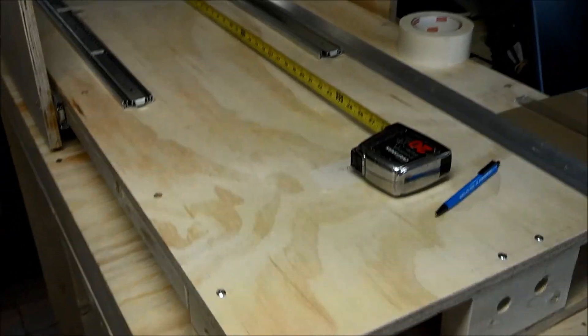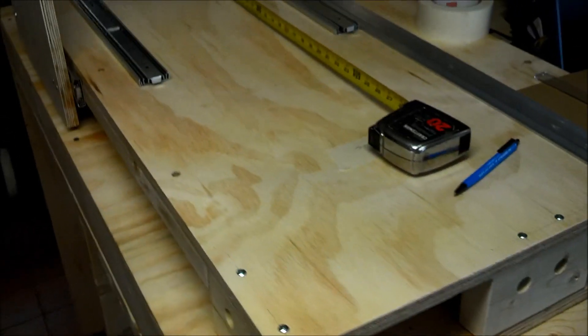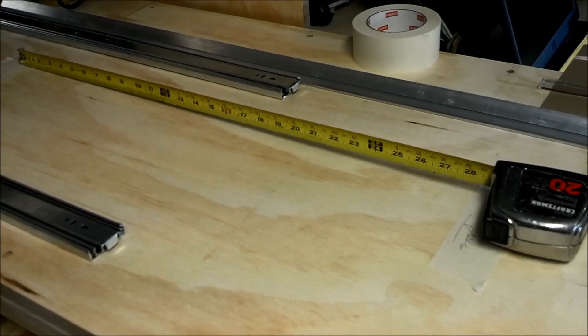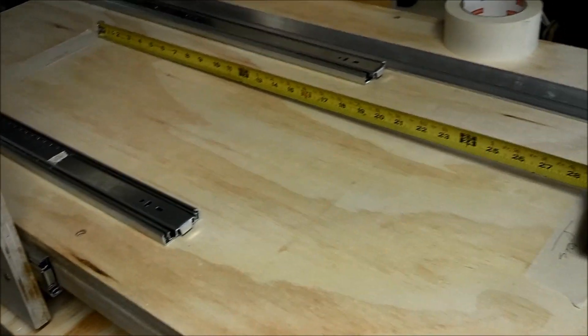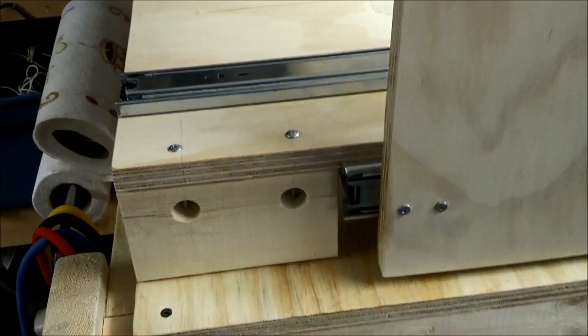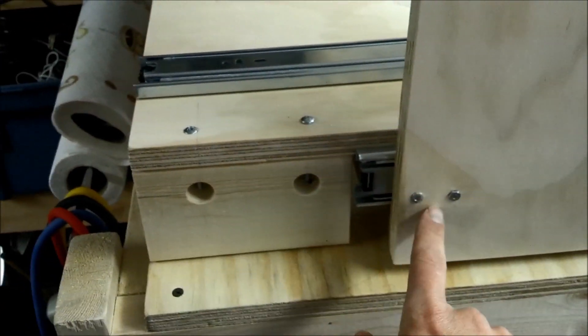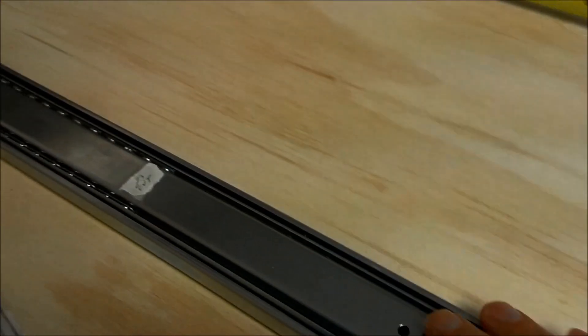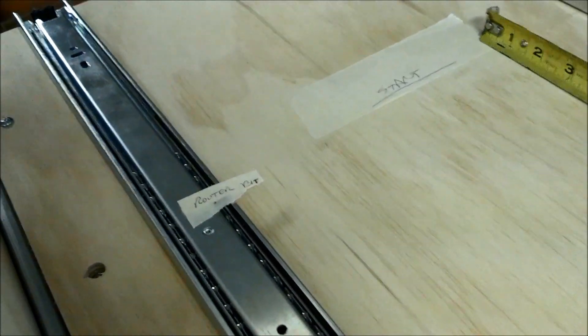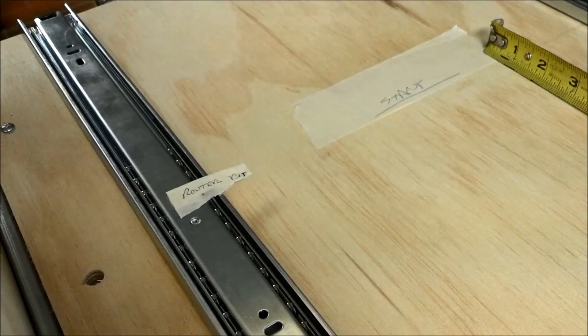Because I don't want these tracks hanging way off the end, I can achieve this 28 inch cut range, which is quite large, by setting these up this way. The drawer slide will be attached from here going across. That tape right here represents about where the router bit will be. That's kind of the start mark there.